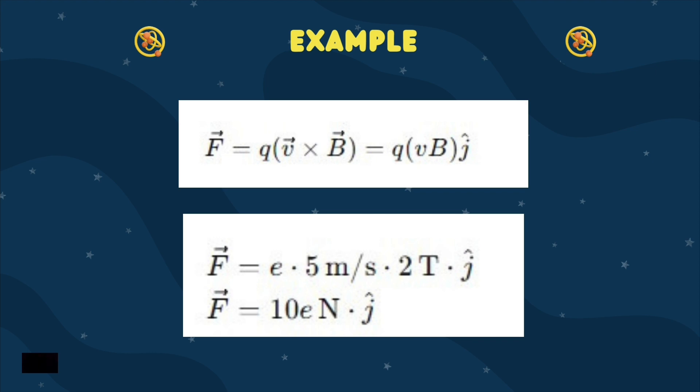We get F equals e times 5 meters per second times 2T times J, equals F equals 10eN times J. So, the force experienced by the positively charged particle due to the magnetic field is 10eN in the positive Y direction.